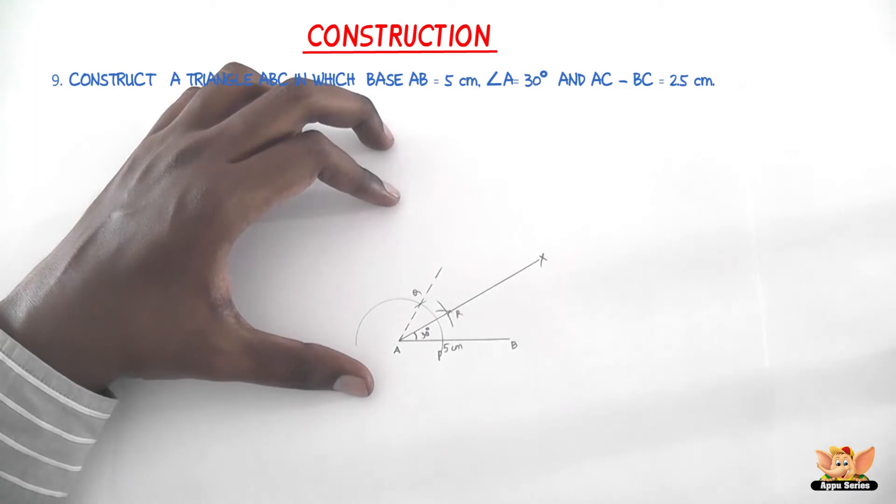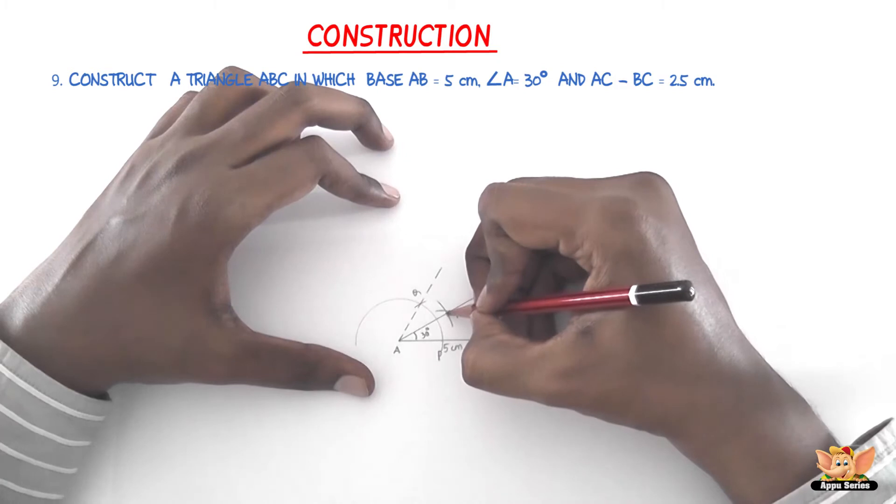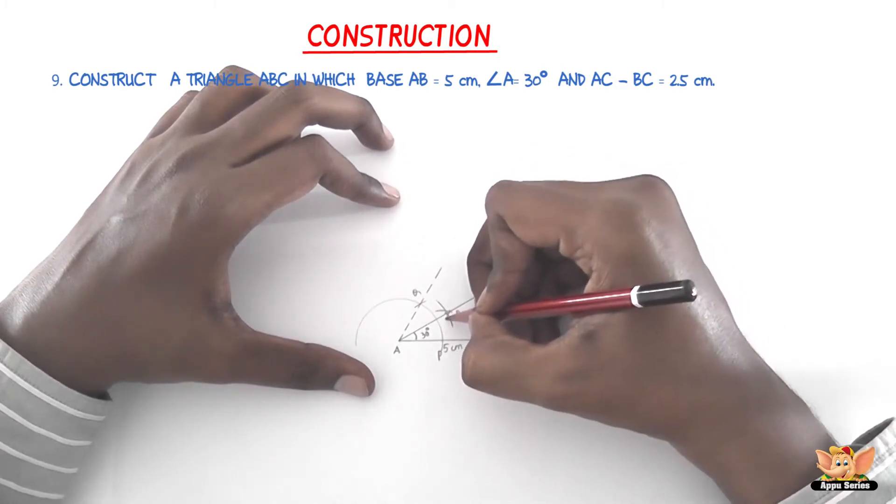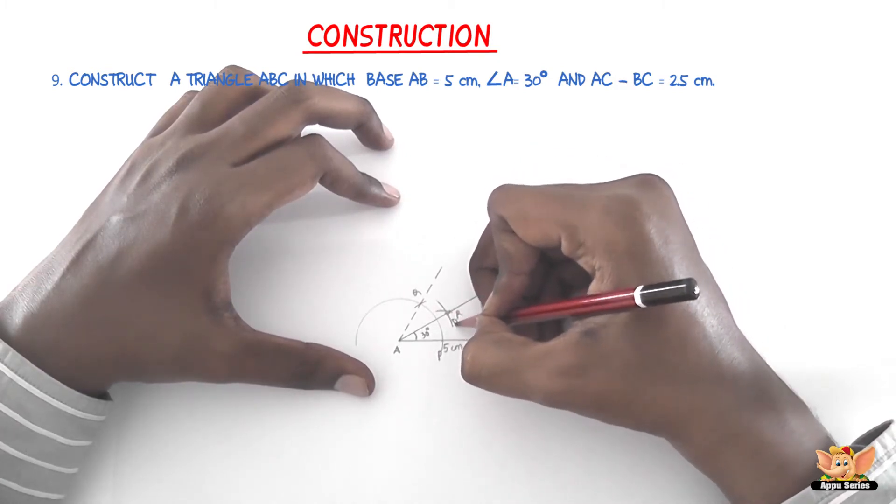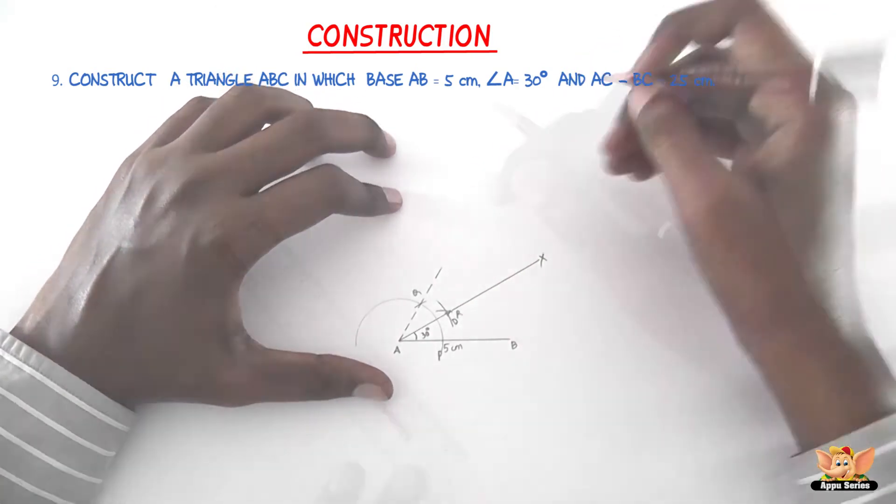Now we cut this line and name it as D. This particular point is D. Don't be confused between R and D. R is different and D is different. So now we'll have to join BD.